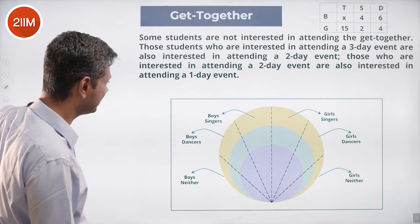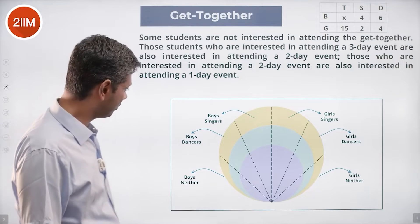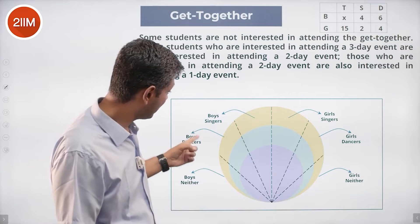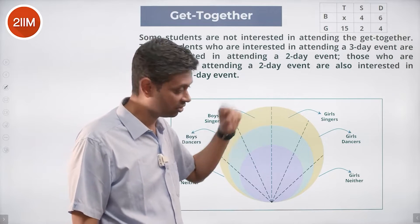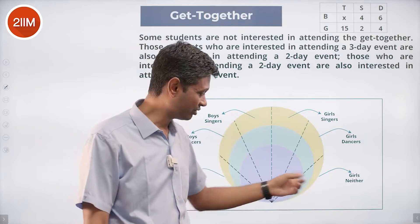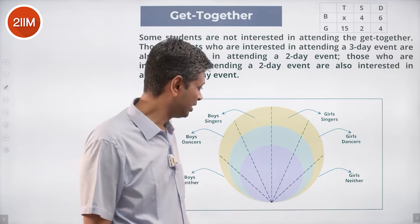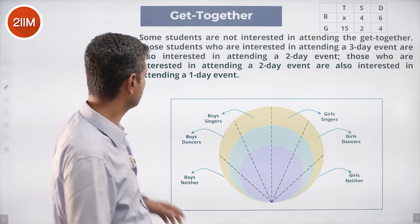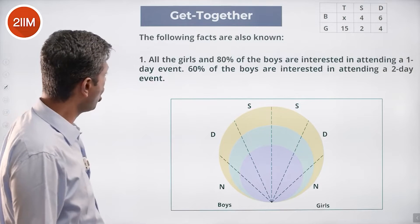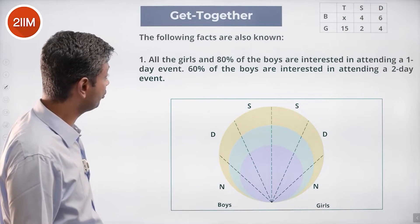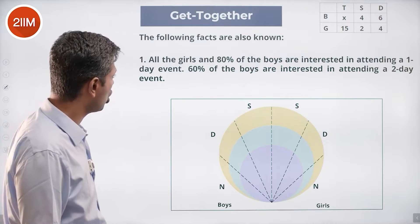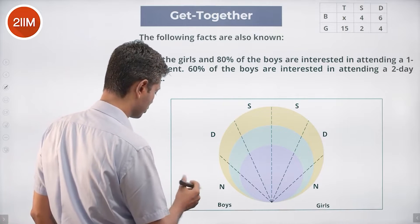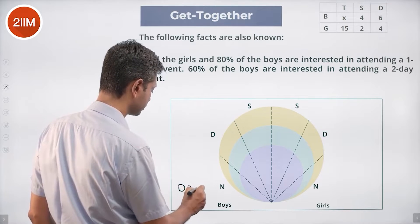For each of three-day, two-day, one-day, you could have dancers, singers, or neither dancer nor singer — so layers of classifications. Some of these cells will probably never get filled; some we may fill. Let's go to the conditions. The first condition: all the girls and 80% of the boys are interested in attending a one-day event.